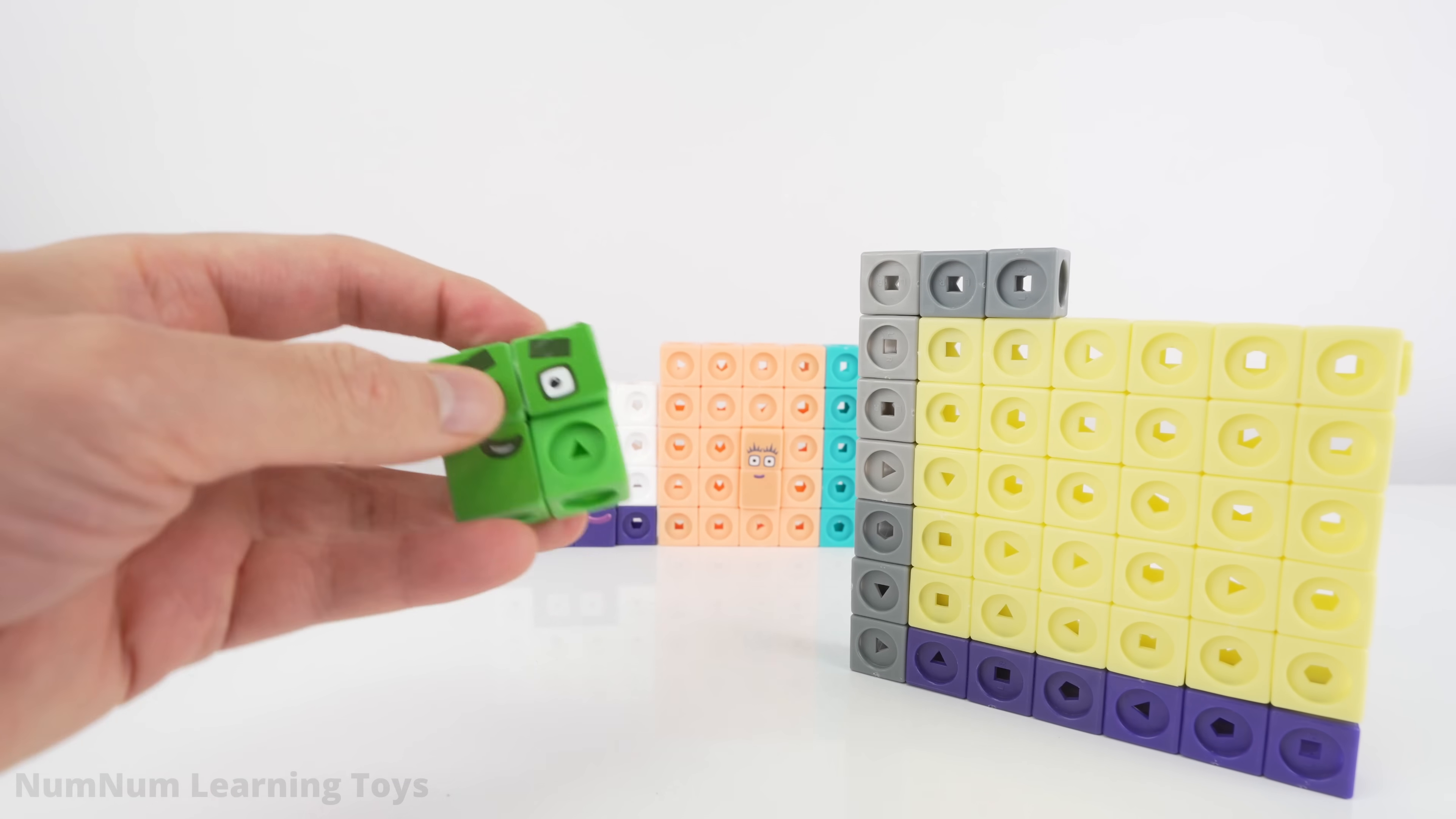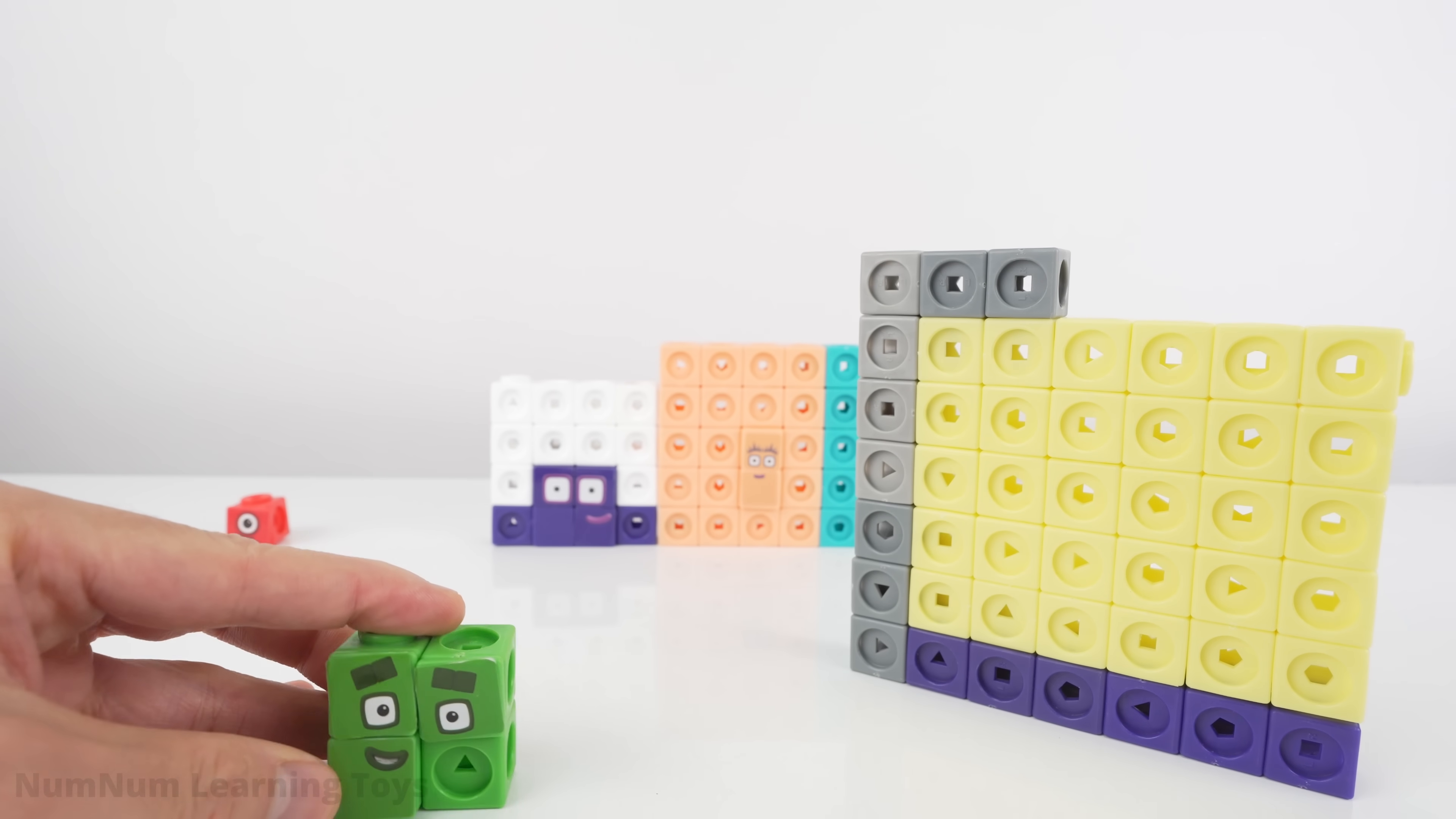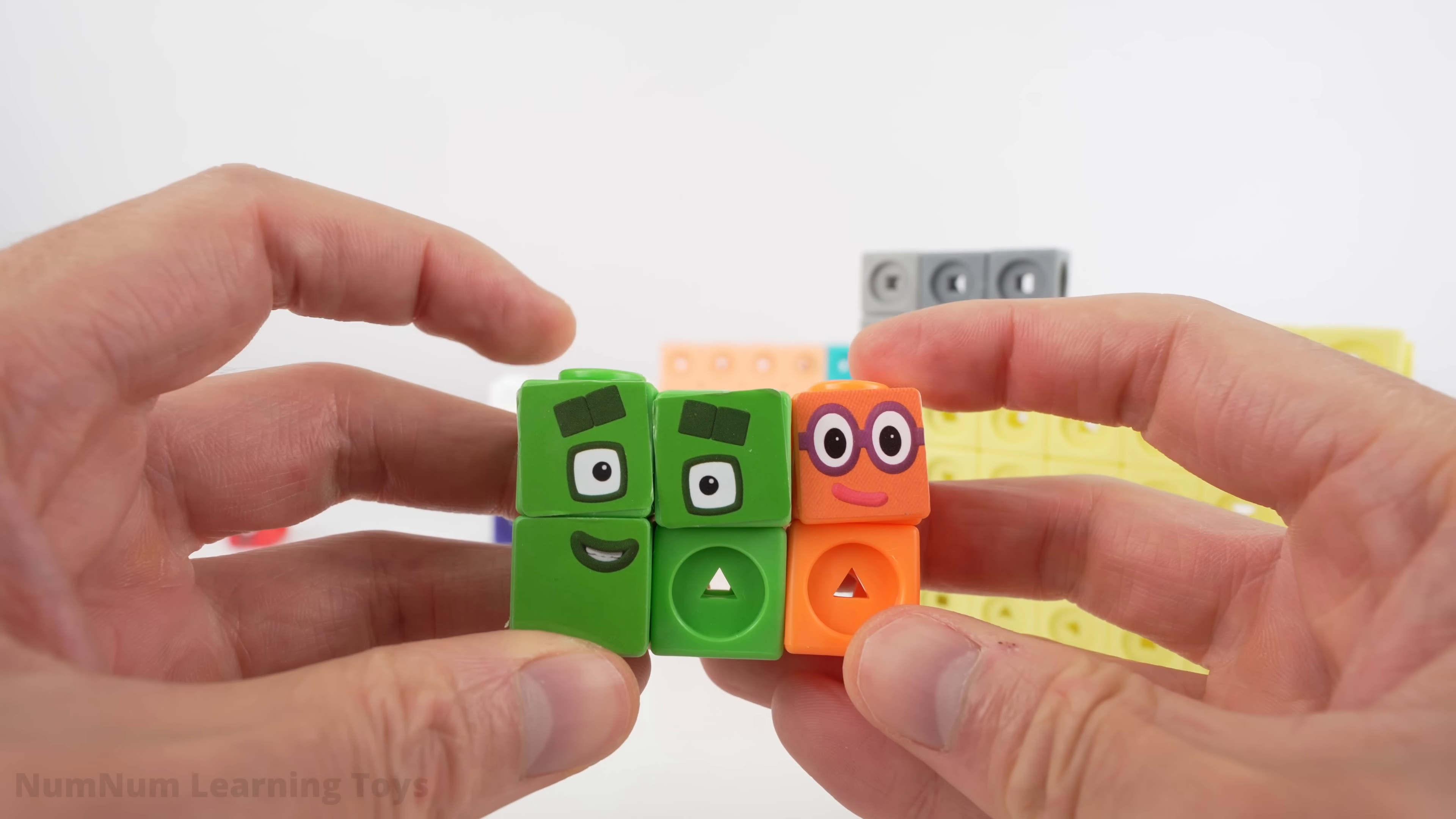Let's grab the number four. Four is a square. Each side has the length of two units.